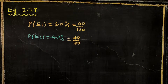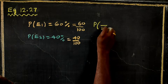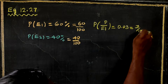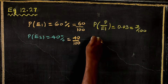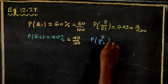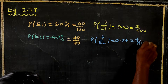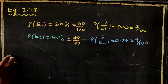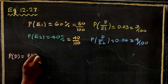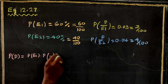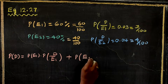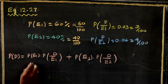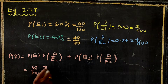Now, the probability that the first engineer produces a defect is 0.03, which we write as 3 by 100. The probability that the second engineer produces a defect is 0.04, which is 4 by 100. The probability of a defect overall equals the probability via Engineer-1 being defective, or Engineer-2 being defective.